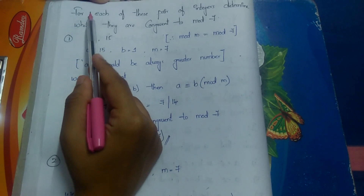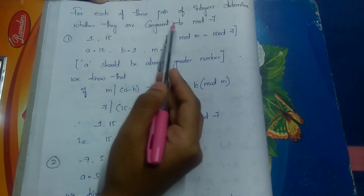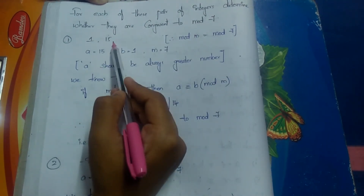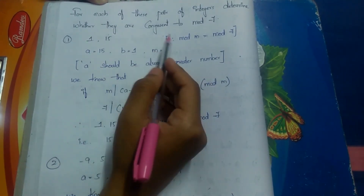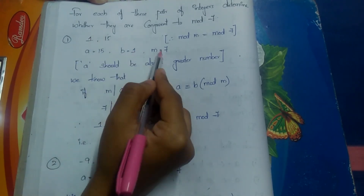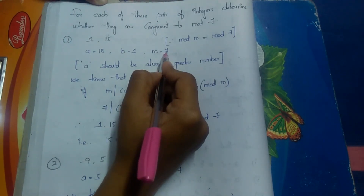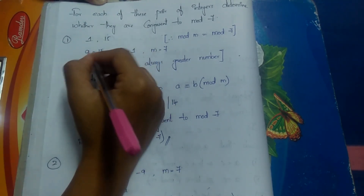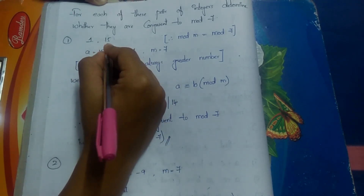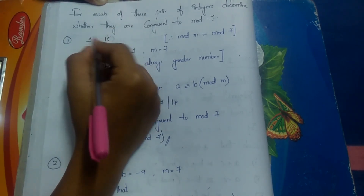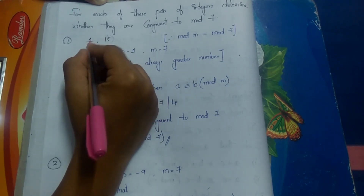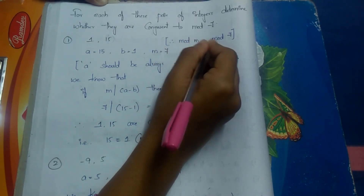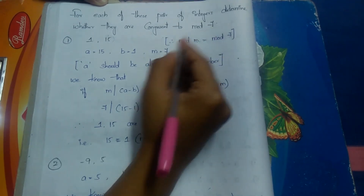Let's solve problems: for each pair of integers, determine whether they are congruent modulo 7. First pair: (1, 15). Here a = 15 (the greater value), b = 1, and m = 7. Always take the greater number as a. The condition is: does m divide a minus b?